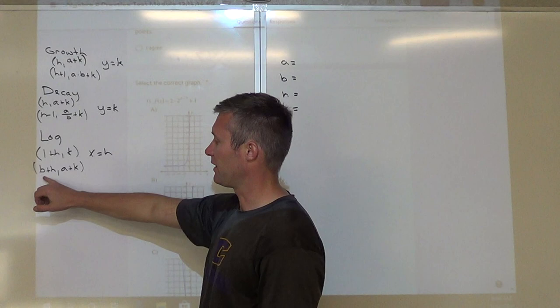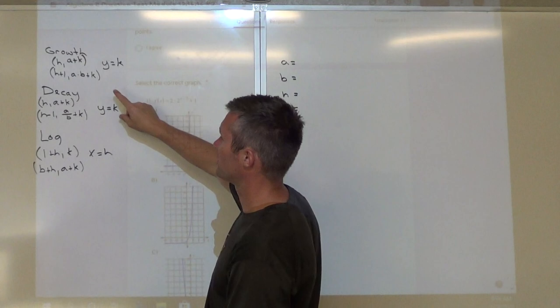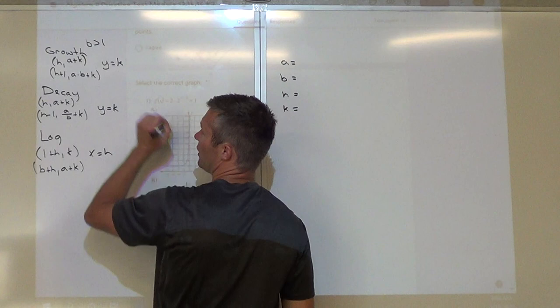The other thing to point out: growth is if your B value is greater than 1, and decay is if your B value is less than 1.